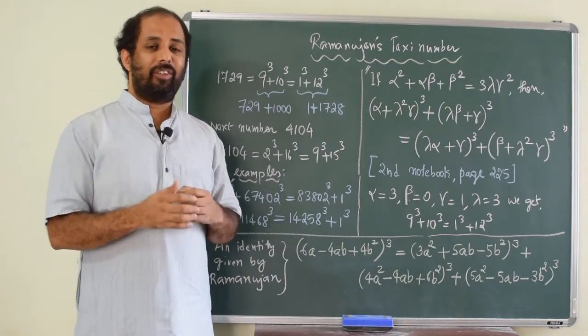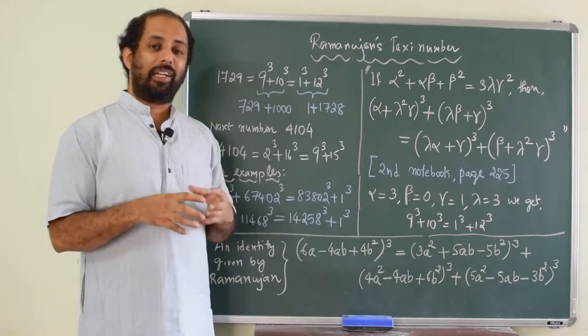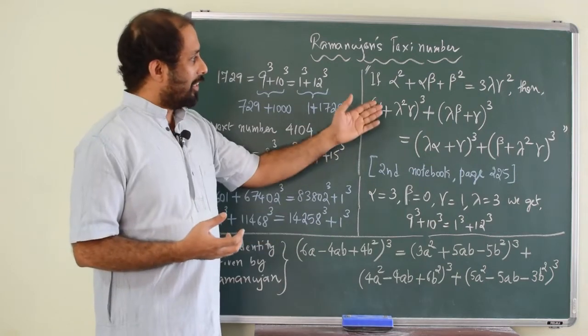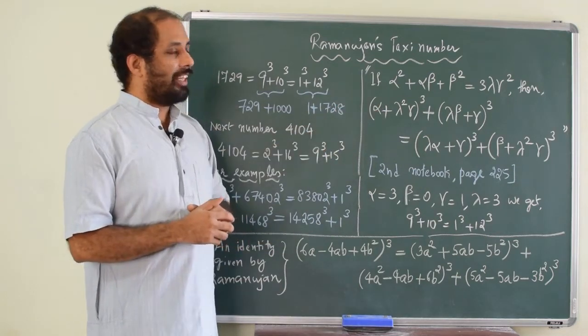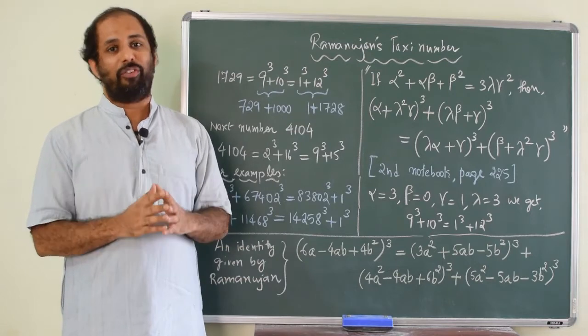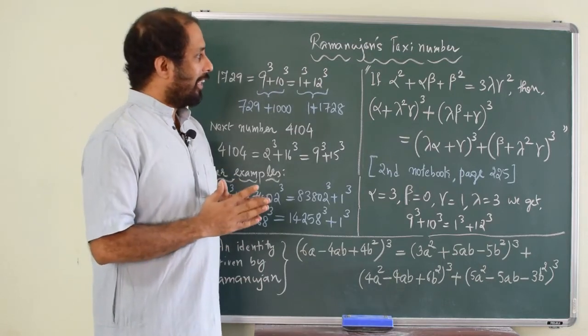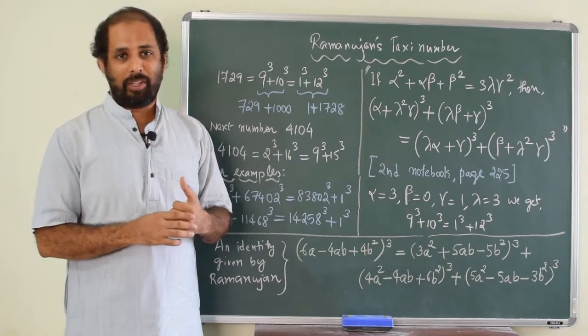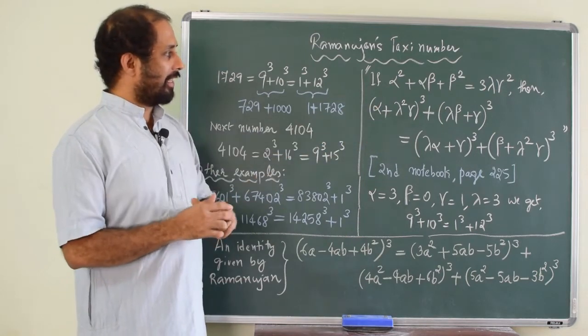He went further and finally, he found one conditional identity which is written like this in his second notebook page 225. And there he had introduced some four variables alpha, beta, gamma and delta. And the identity is like this.